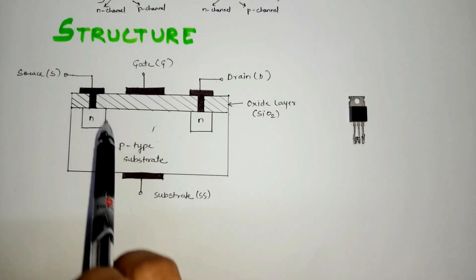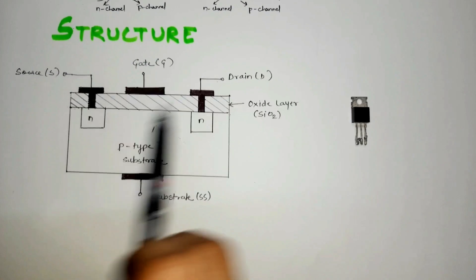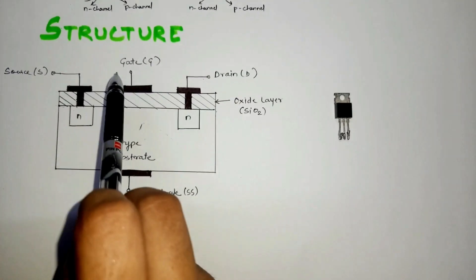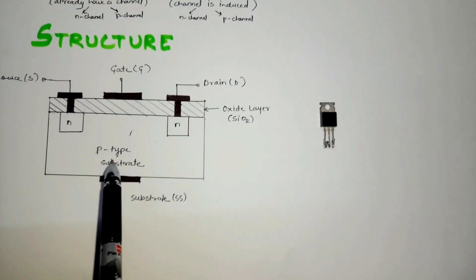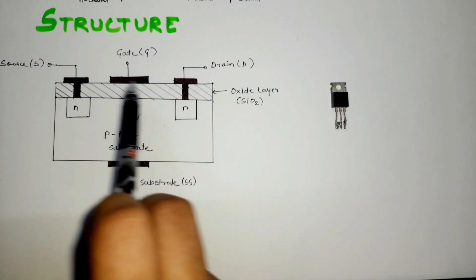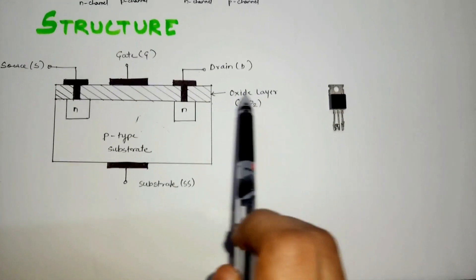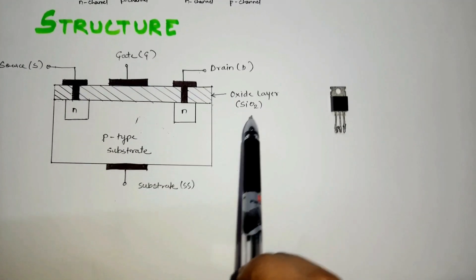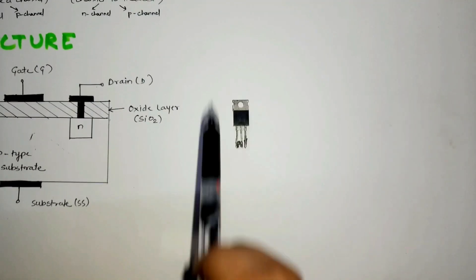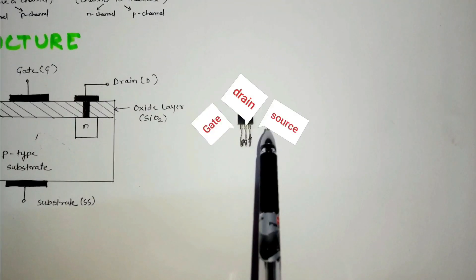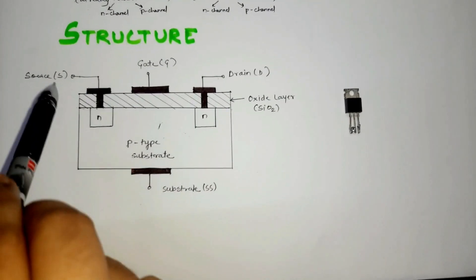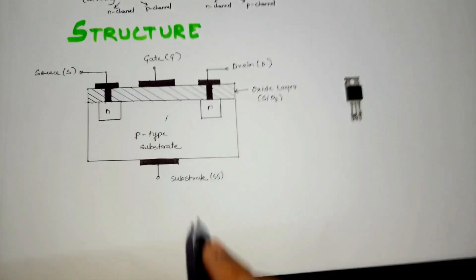The drain and source are connected to the N-doped regions through metallic contacts. The gate terminal is isolated from the P-type substrate by an insulating layer of oxide layer, and we have used silicon dioxide. In actual MOSFETs, you can see only three terminals. This is because the substrate and source are connected internally to the ground, like this.